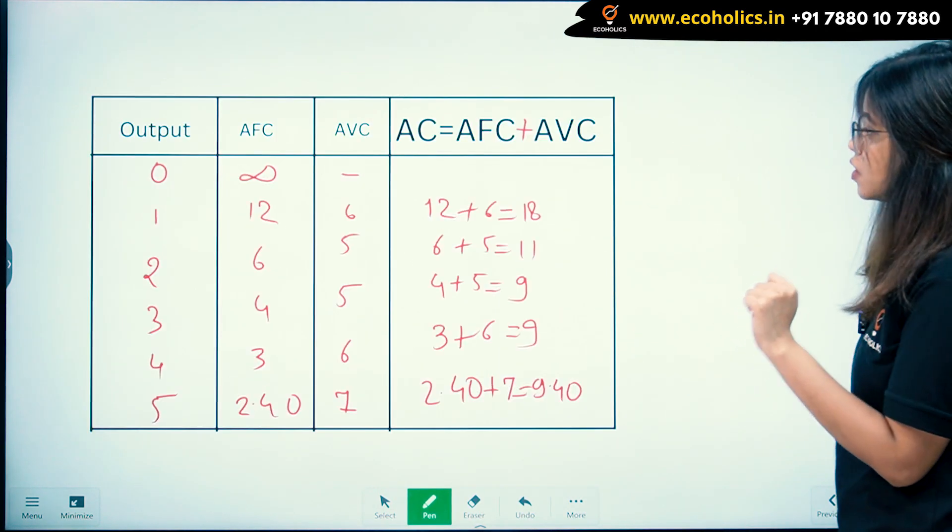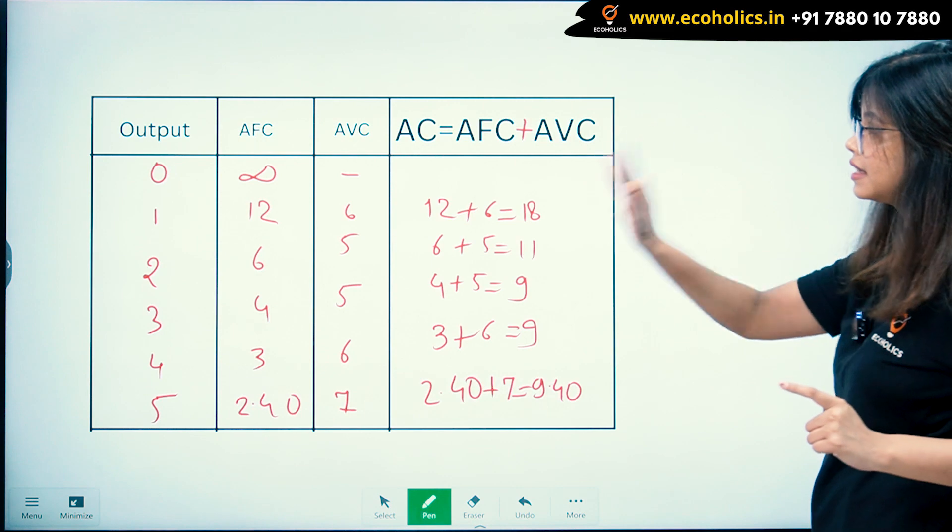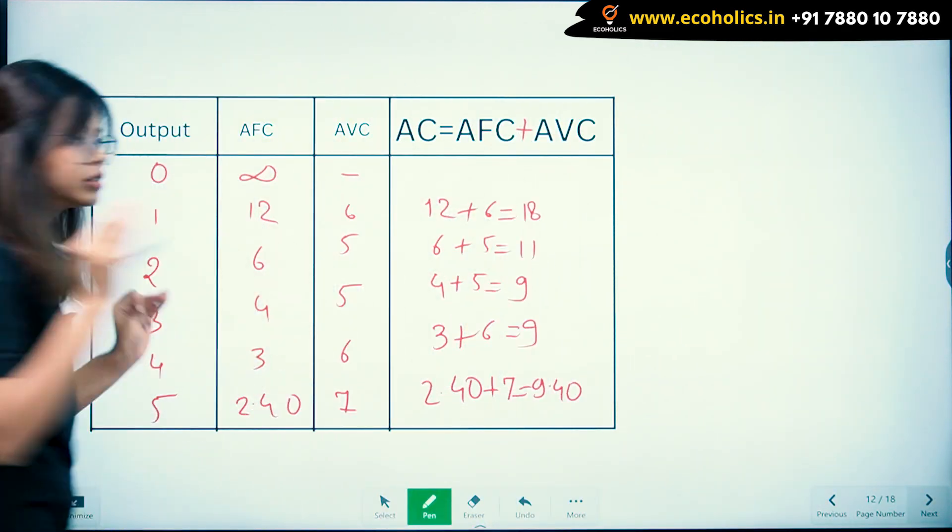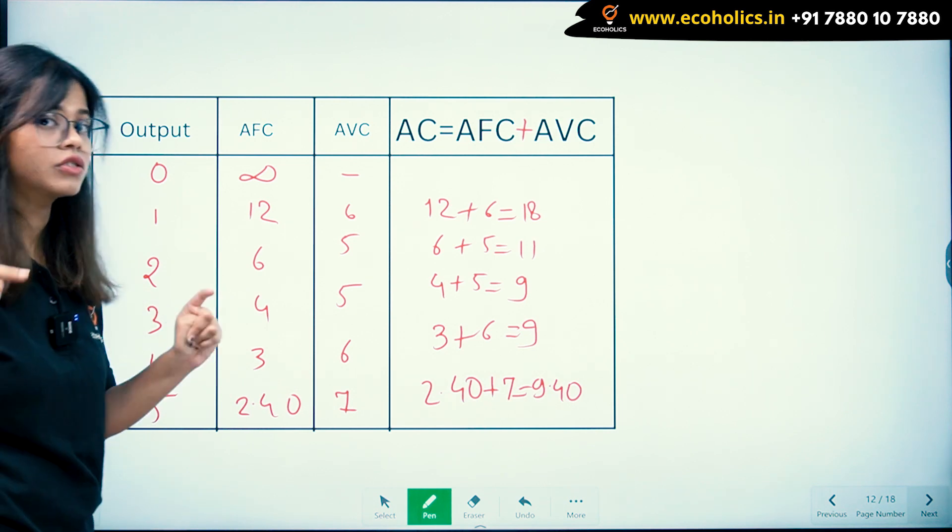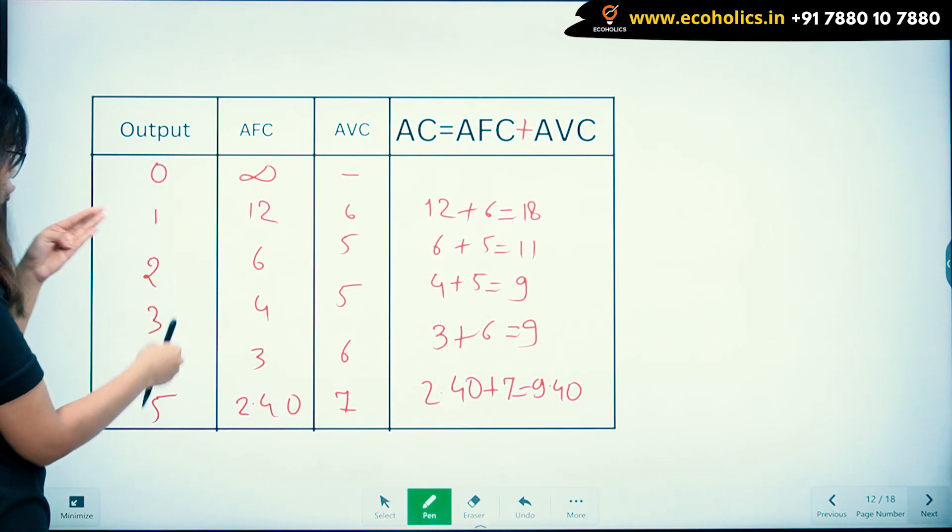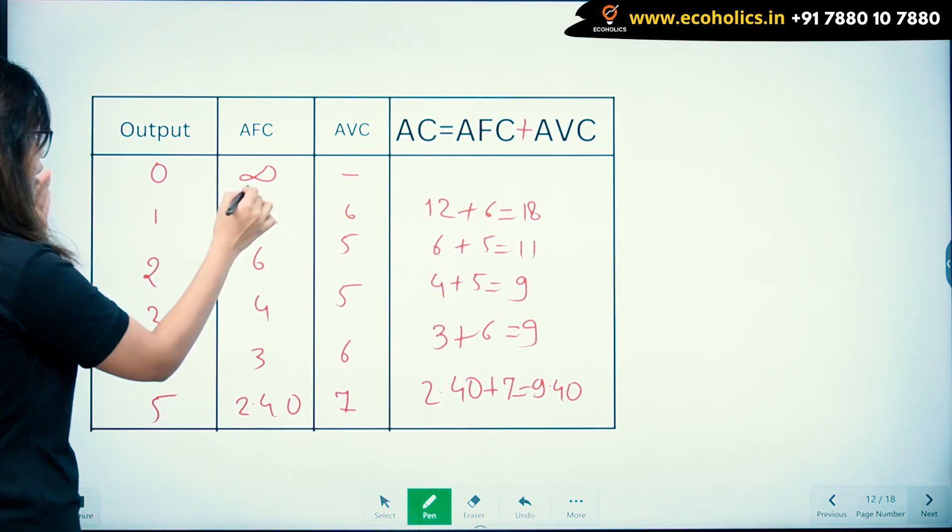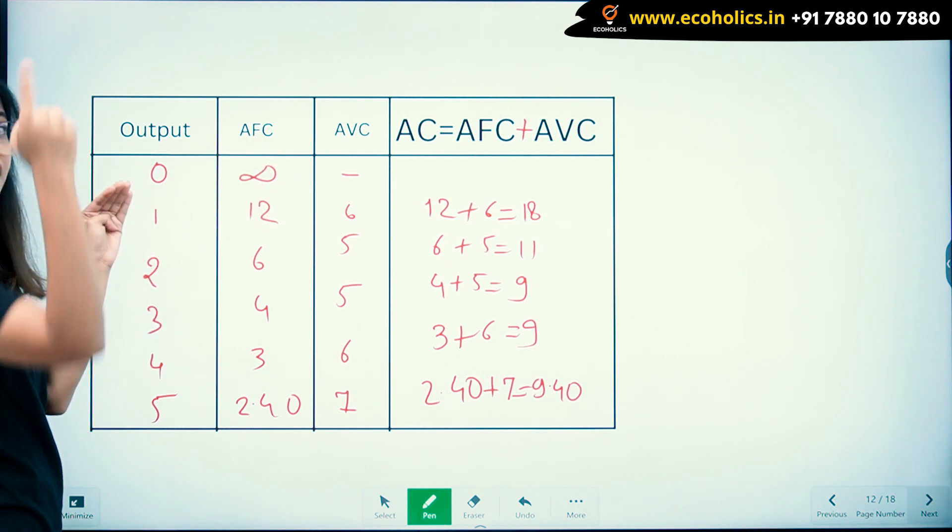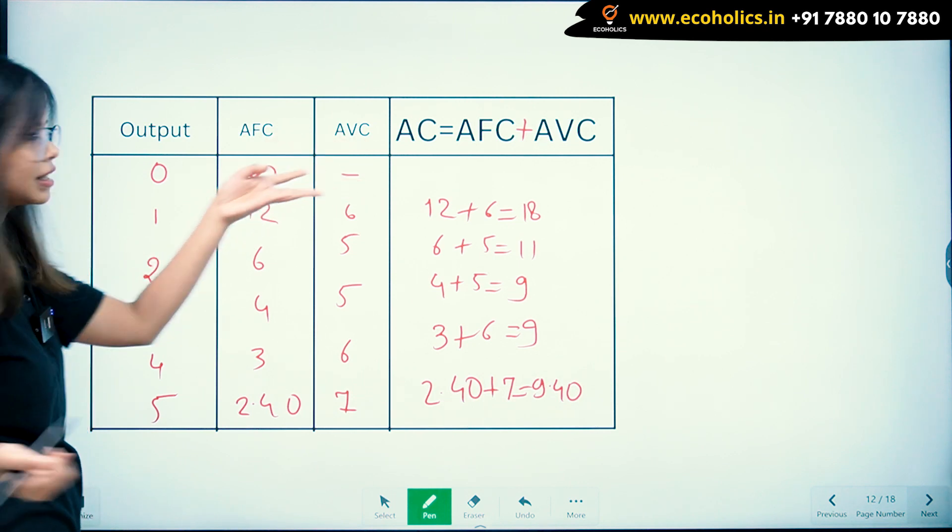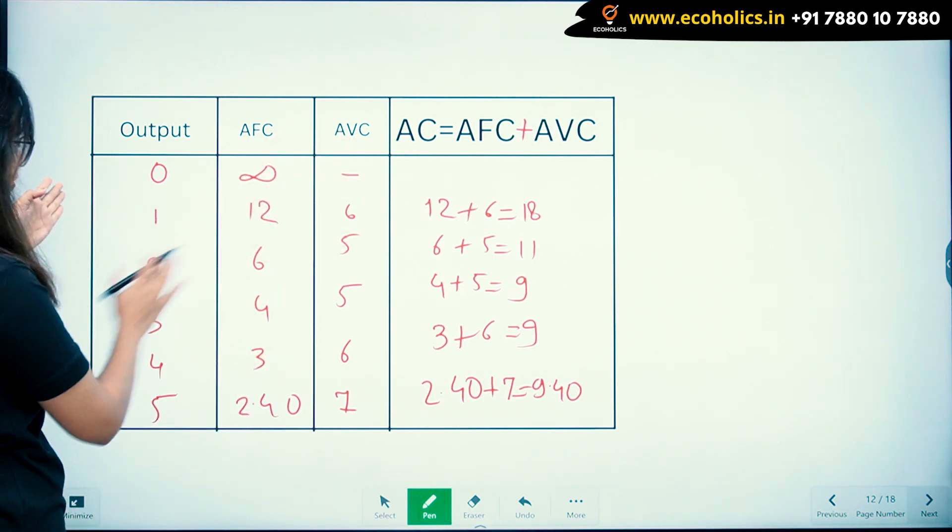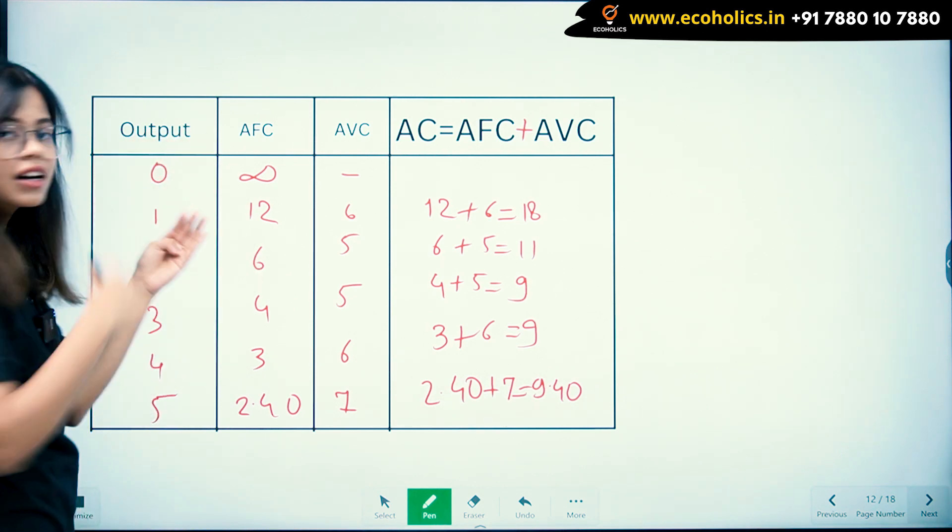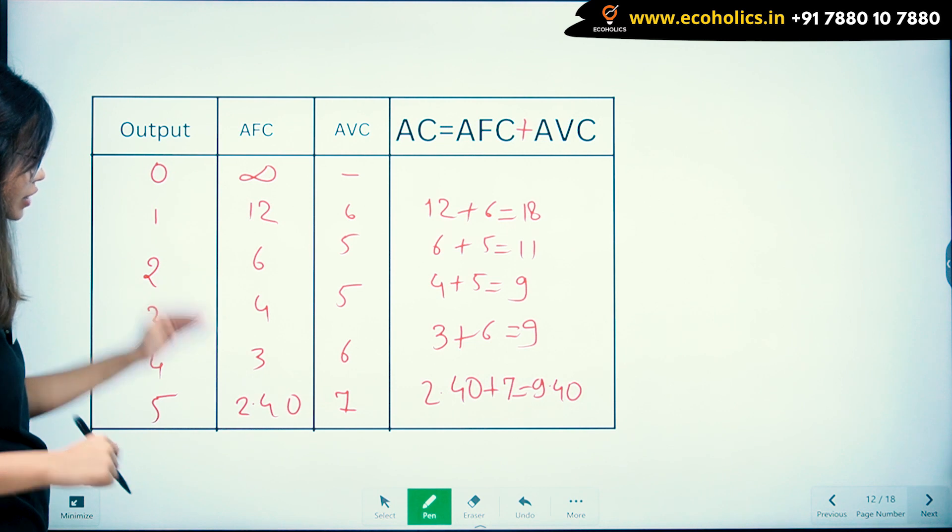I have calculated AC from AFC and AVC. Just think what we have done just now. Output goes on increasing from zero to one, two, three, four, five. What was your AFC? It was infinite. TFC was 12, so we calculated it as infinite. AVC was nothing initially - 12, 6, 6...